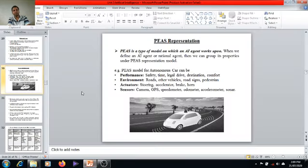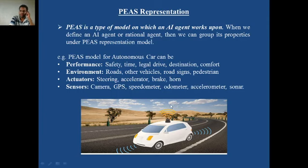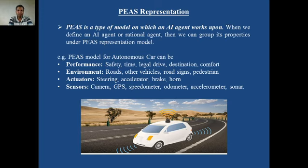Hello friends, today we are going to discuss one more new topic: PEAS representation, which we started in the previous lecture. PEAS is comprised of four components: Performance, Environment, Actuators, and Sensors. PEAS is a type of model on which AI agent works. When we define an AI agent or rational agent, we can group its properties under the PEAS representation model.